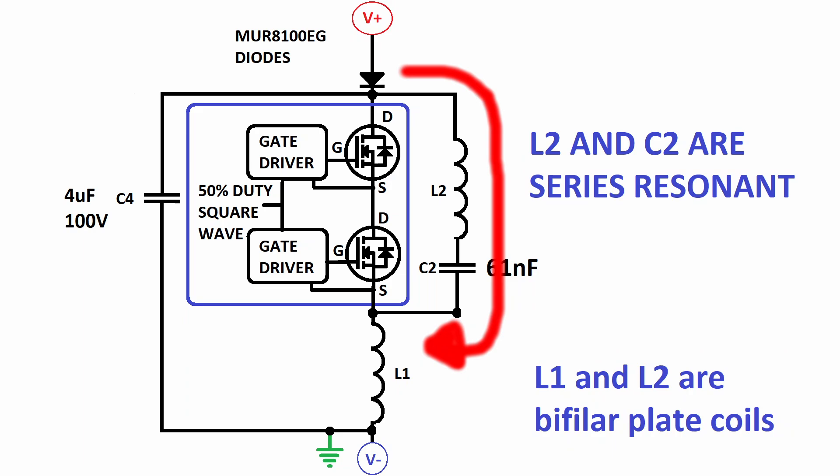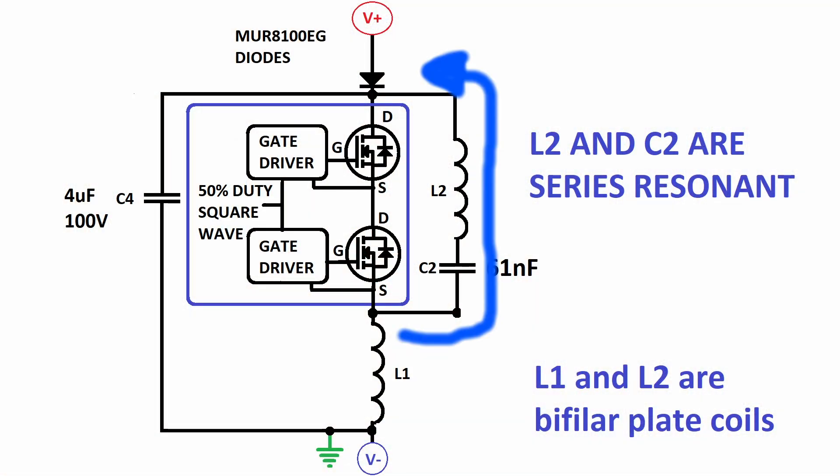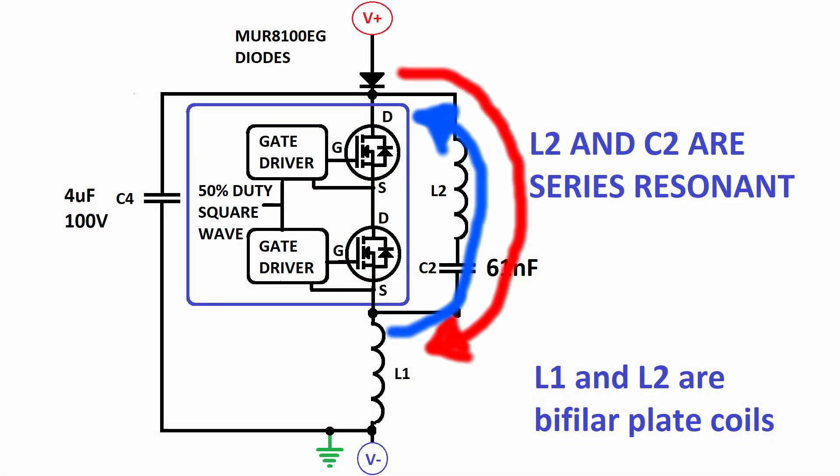One theory that I have is that the L2 series resonant primary coil is fed by two currents that move through L2 in opposite directions. One current enters at the outside rim of the L2 pancake coil and comes from the V positive of the power supply. The other current enters at the inside rim of the L2 pancake coil and comes from the L1 coil impulse. Could this simultaneous movement of positive and negative current in opposite directions through the L2 coil create a ripple in the ether?